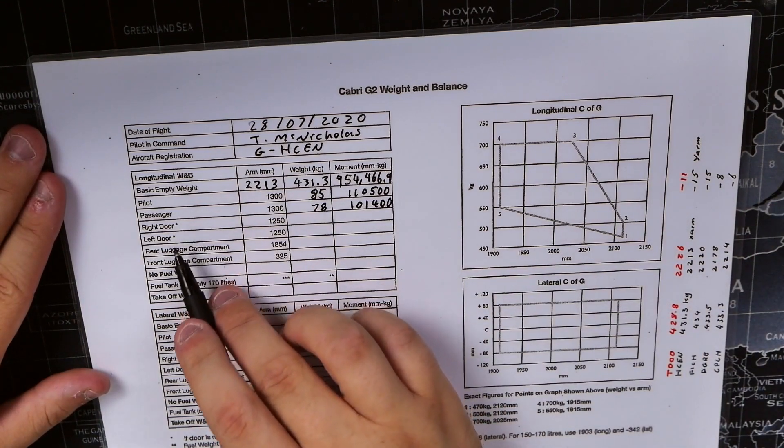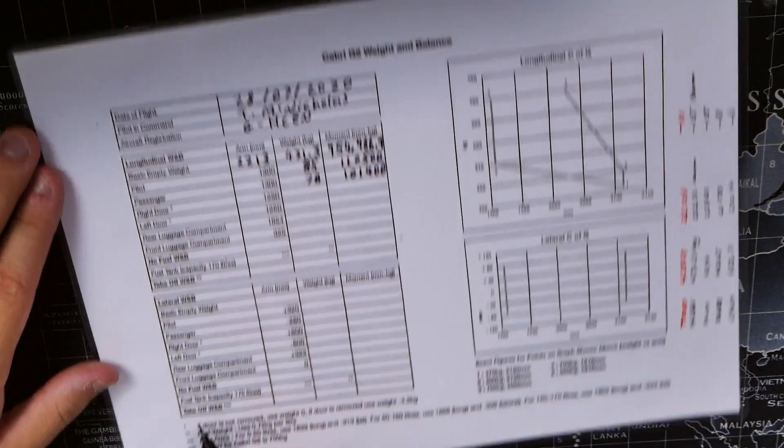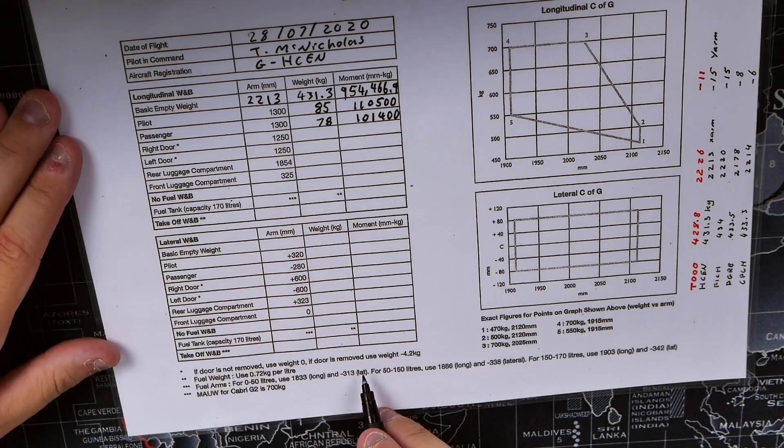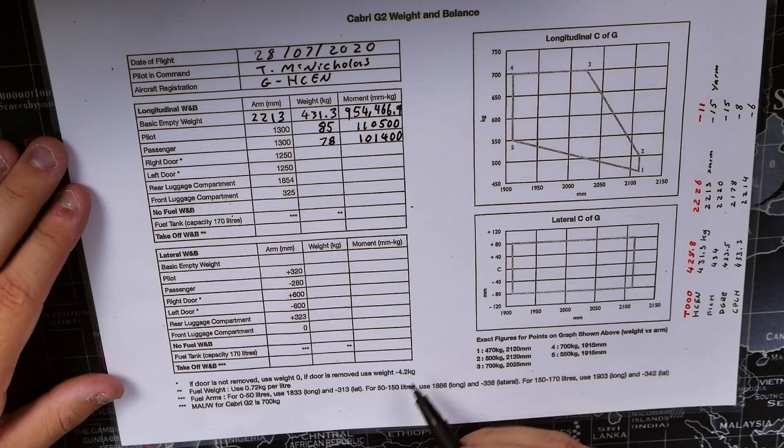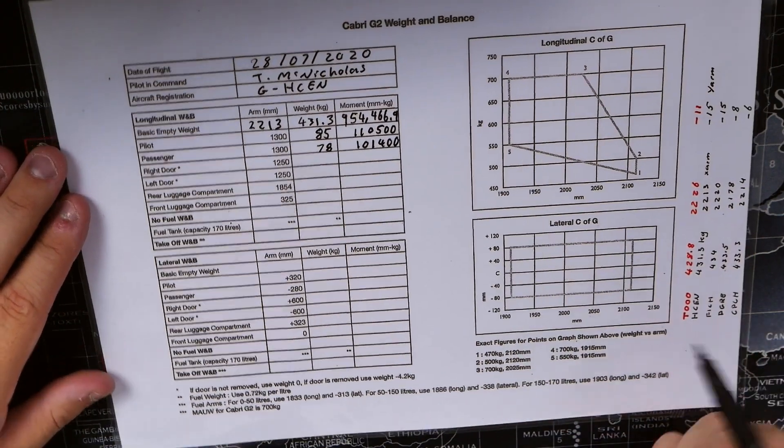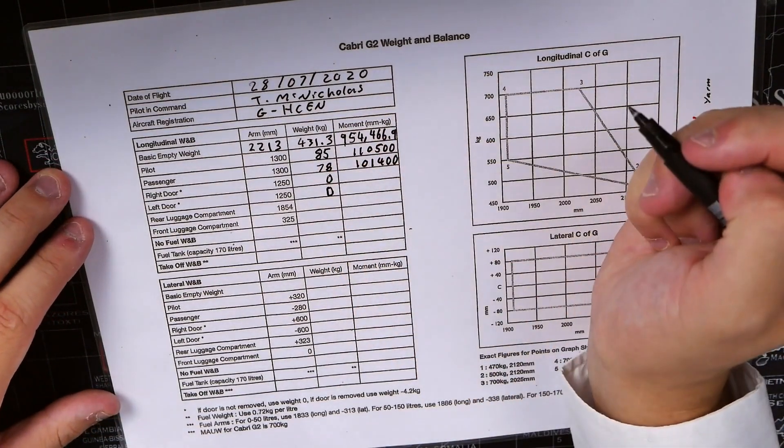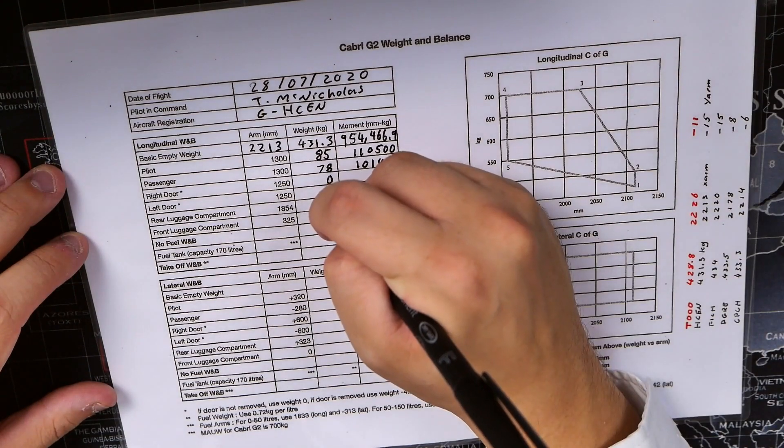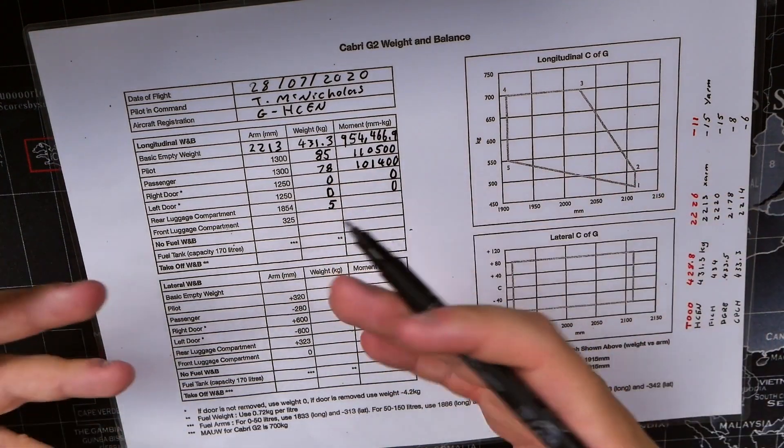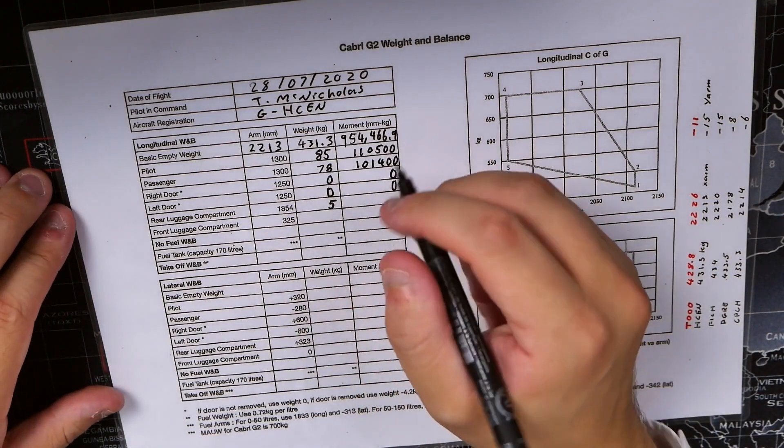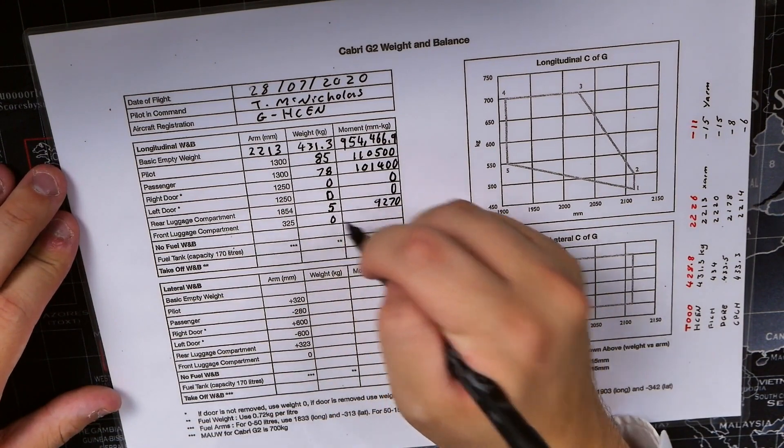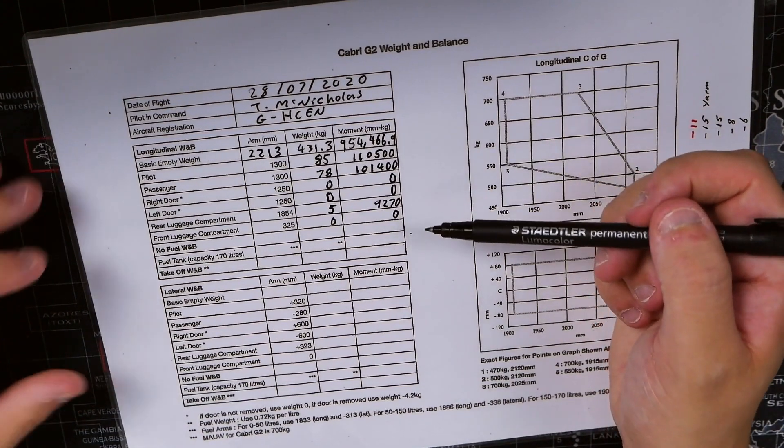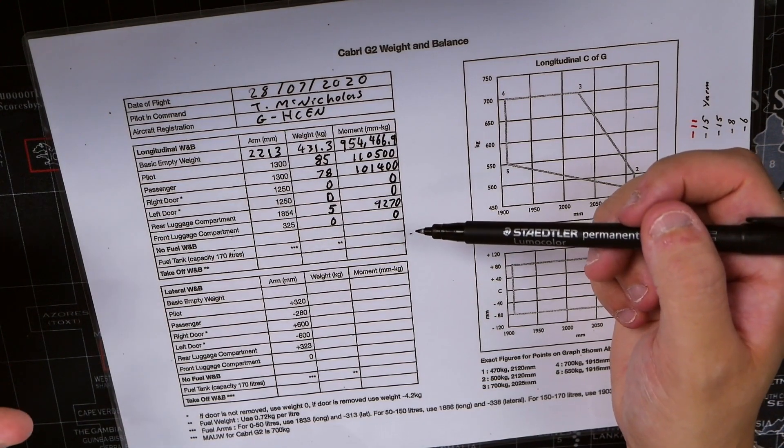This is where you need to read the sheet itself. You've got asterisks here, so looking at the bottom, it says if door is not removed use weight zero. If door is removed use weight minus 4.2 kilograms. Because I'm not removing the doors today, I'm going to put zero for both the right door and the left door. In the rear of the aircraft, we've got five kilograms of kit, and we haven't got anything in the front luggage compartment, so that's zero.